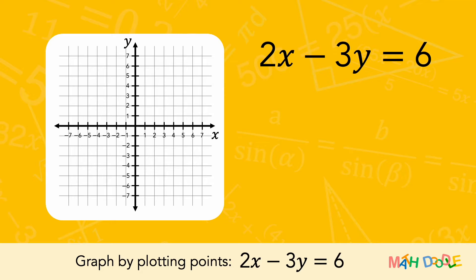To graph the equation 2x minus 3y equals 6, we are going to find several points that the line of the equation passes through. The points on the line are solutions to the equation.